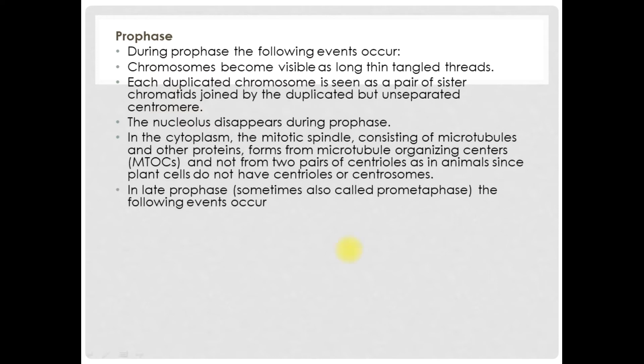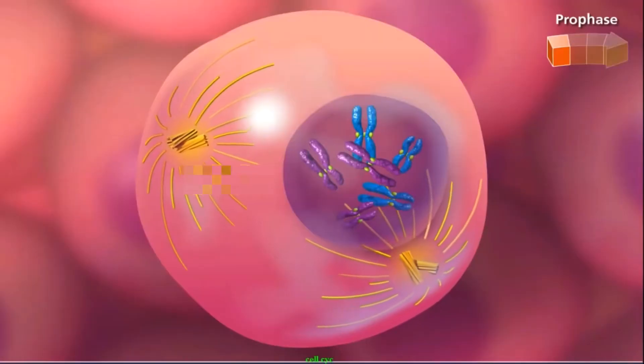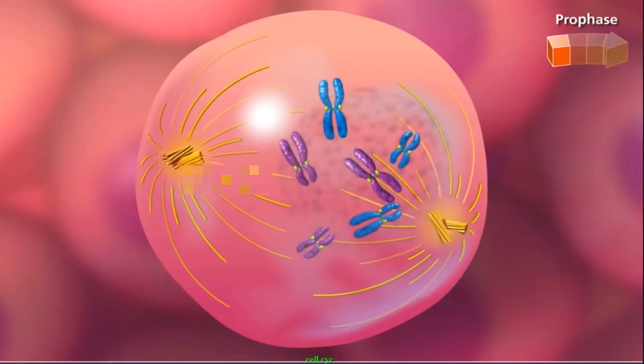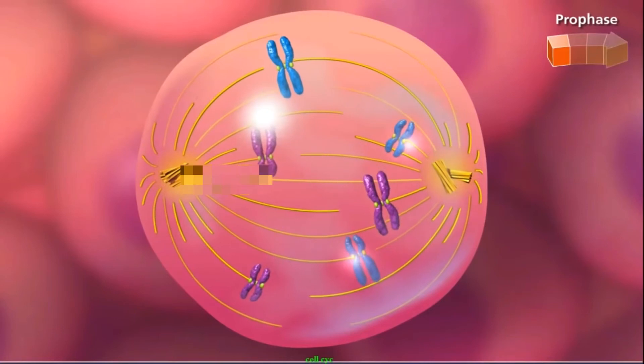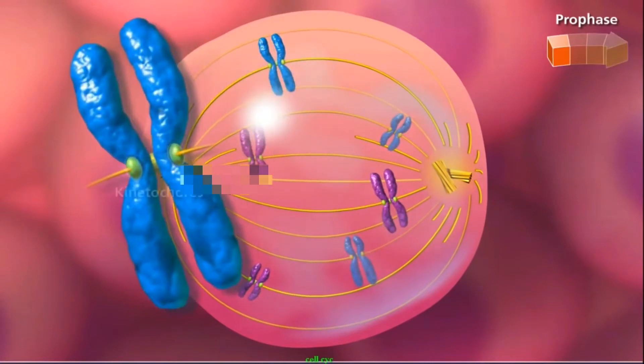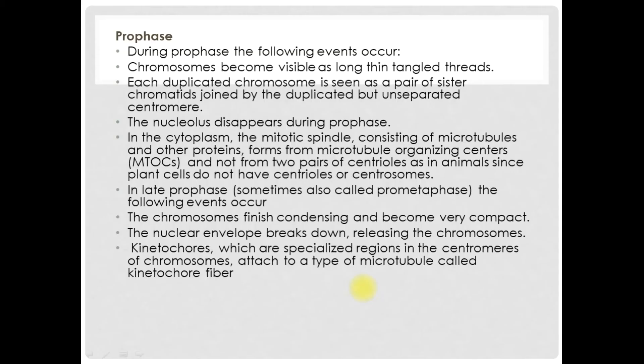In late prophase, sometimes also called prometaphase, the following events occur. The chromosomes finish condensing and become very compact. The nuclear envelope breaks down releasing the chromosomes. Kinetochores, which are specialized regions in the centromeres of chromosomes, attach to a type of microtubule called kinetochore fiber. The chromosomes begin to migrate towards the cell center.